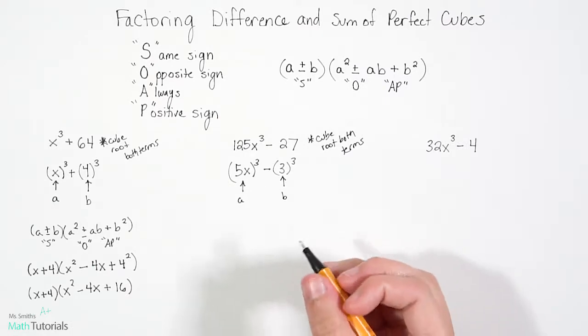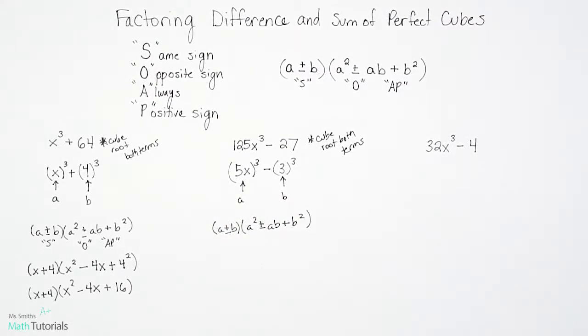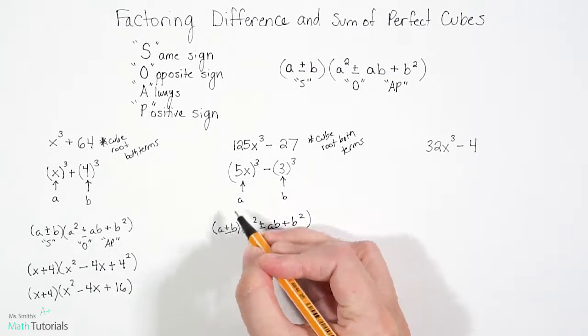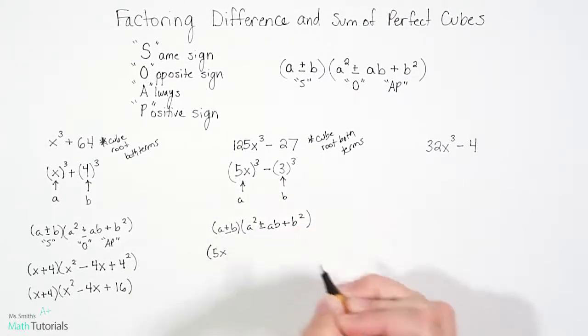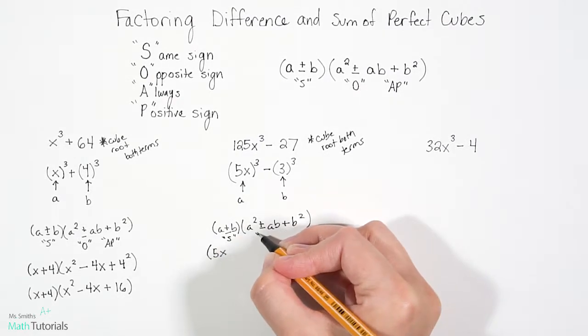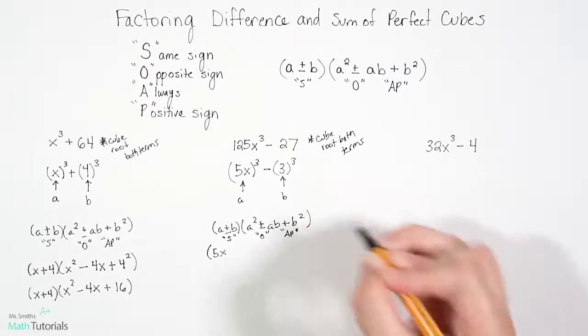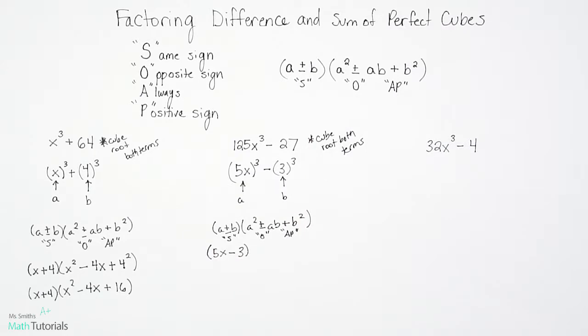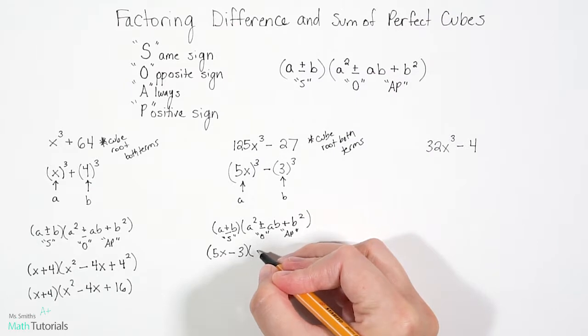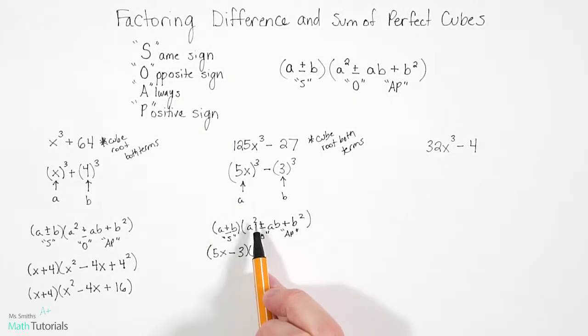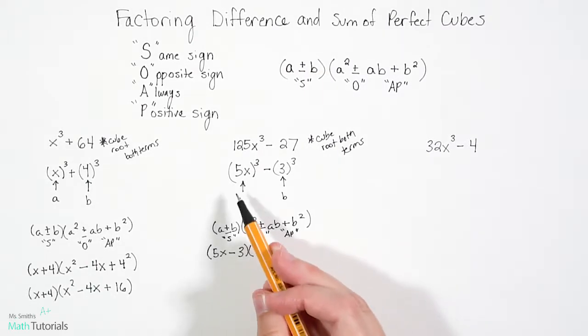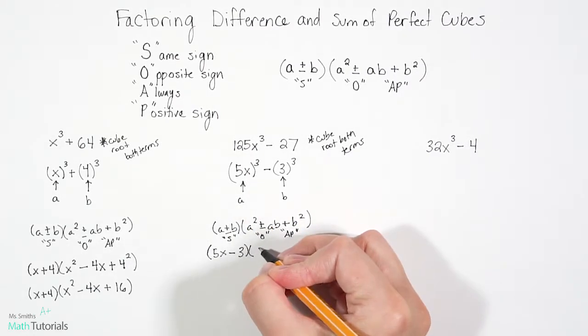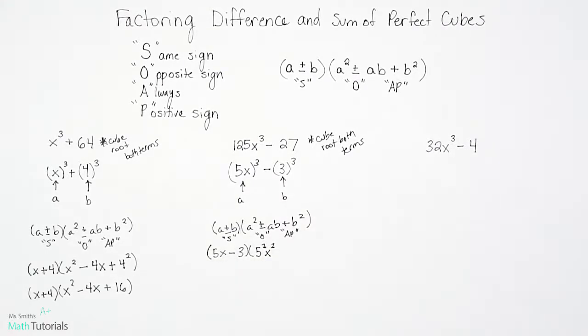I'm going to go ahead and rewrite this here because it just helps us line it up. And now let's go ahead and insert our a and b values and figure out our signs. Parenthesis a is 5x. Now remember, this is our s. So that was our s, our o, and then our ap. S stands for same sign. So we're still going to have subtraction. b is 3. We'll close that parentheses. a 5x squared. Now this is really important. It's the whole a squared, meaning it's not just 5x², right? If you just write 5x², you're only squaring the x. Whereas we need to square the 5 and the x. So here's how we're going to write that. 5² times x². I know that feels a little weird, but we've got to square both of those values that make up the a value.